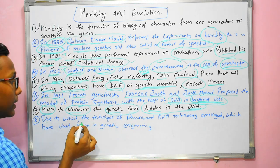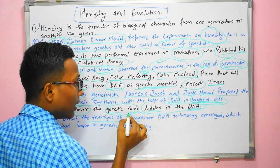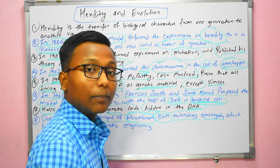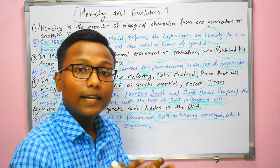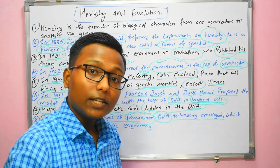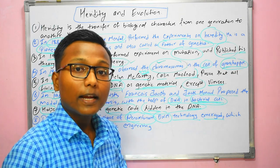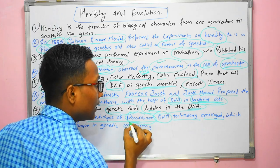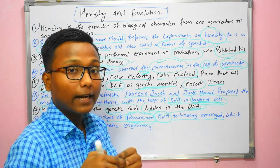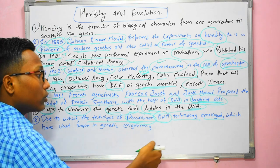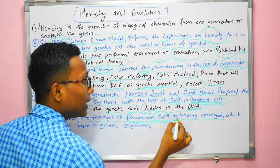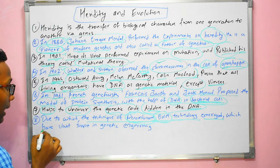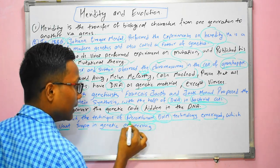Because we now know that DNA has many genetic codes and this genetic code can run the whole body, a technique has been developed which we call recombinant DNA technology. This technique has vast scope in genetic engineering.